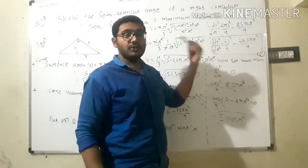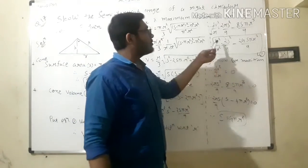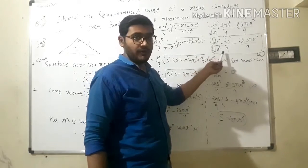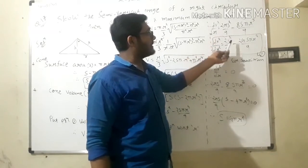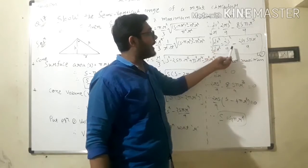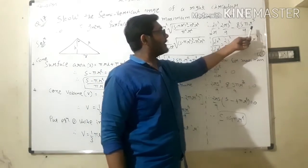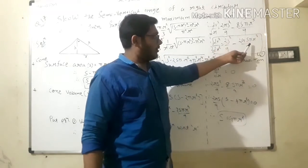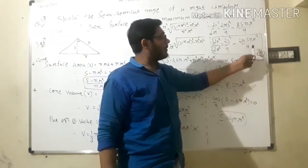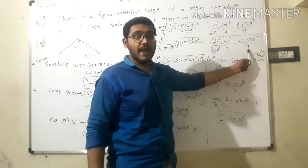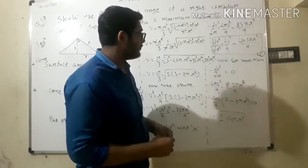Taking another differentiation with respect to r for the second derivative: d²V²/dr². The 2r term cancels out, leaving 2S/9 from the first part, and differentiating 3r² gives the second part. So d²V²/dr² = 2S²/9 - 24Sπr²/9. This is equation number 1 for the second derivative.